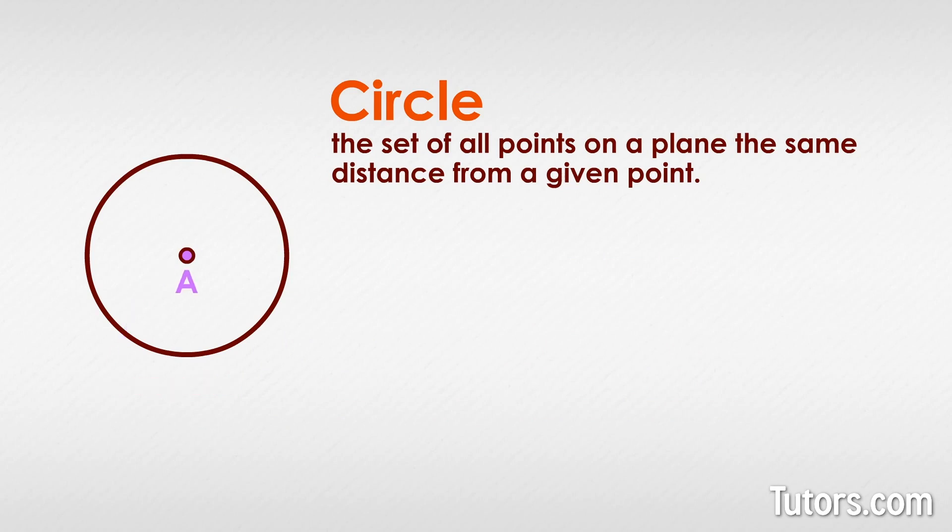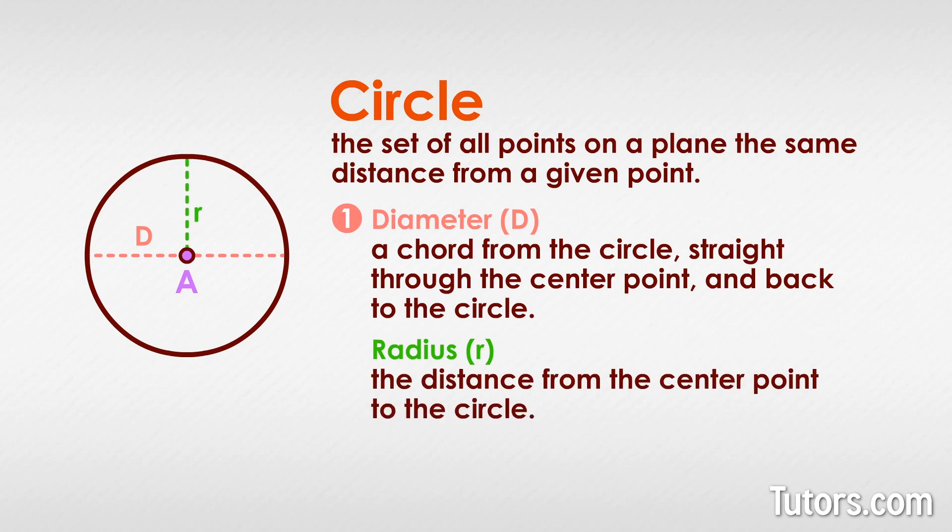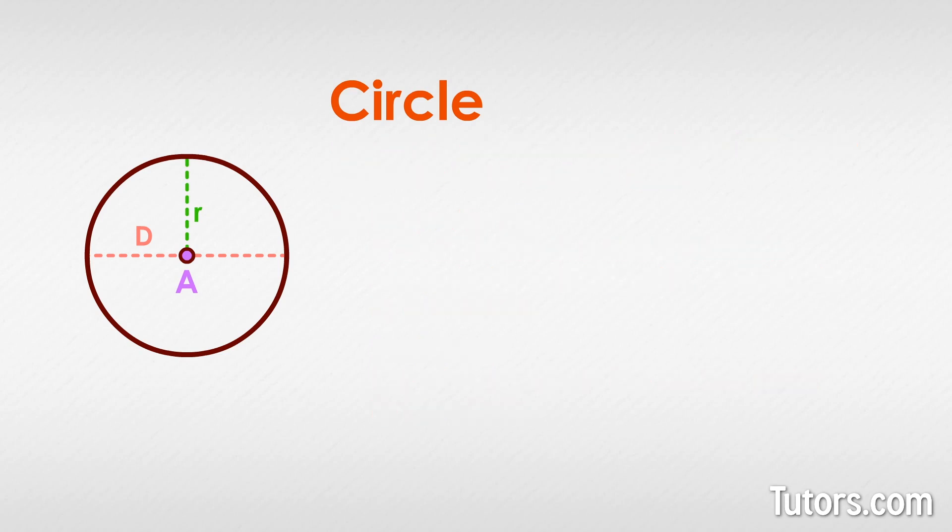A major part of a circle is its diameter, which is a chord from the circle straight through the center point and back to the circle. Half of a diameter, a radius, is the distance from the center point to the circle. Any line segment originating and ending at the circle is a chord.